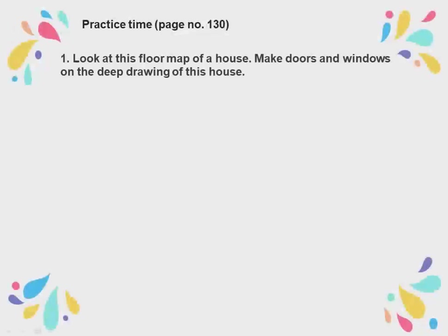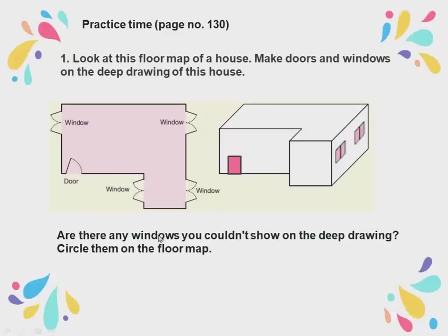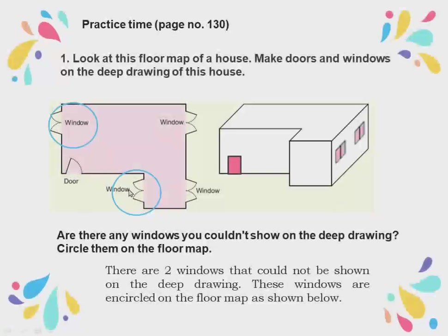Practice time, page number 130. Look at this floor map of a house and make doors and windows on the deep drawing. The 3D image has three dimensions including height. The door from the floor map is placed on the corresponding wall of the deep drawing. For windows, only the two windows visible on the front wall can be drawn. There are two windows that could not be shown on the deep drawing, and these two windows are encircled on the floor map.